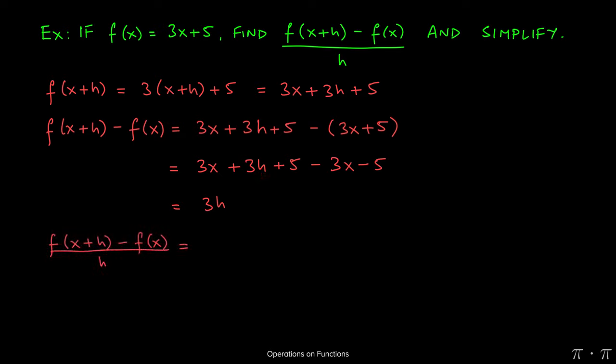Now the last piece of the puzzle is the division by h. I've already simplified, found and simplified the numerator. The numerator is just 3h. Now if I divide this by h, the h's will cancel, leaving behind just 3 as the answer.